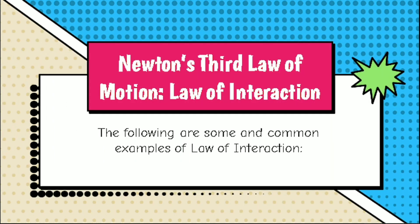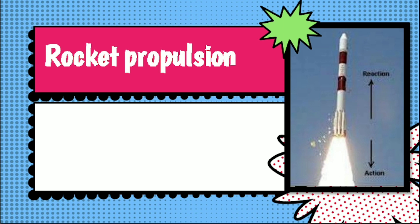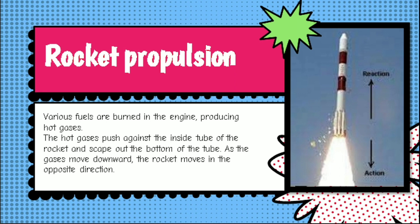Let us have examples of Newton's third law of motion. Rocket propulsion: the reaction of a rocket is an application of the third law of motion. Various fuels are burned in the engine, producing hot gases. The hot gases push against the inside tube of the rocket and escape out the bottom of the tube. As the gases move downward, the rocket moves in the opposite direction. The forces of the hot gases and the rocket are equal but in opposite directions.